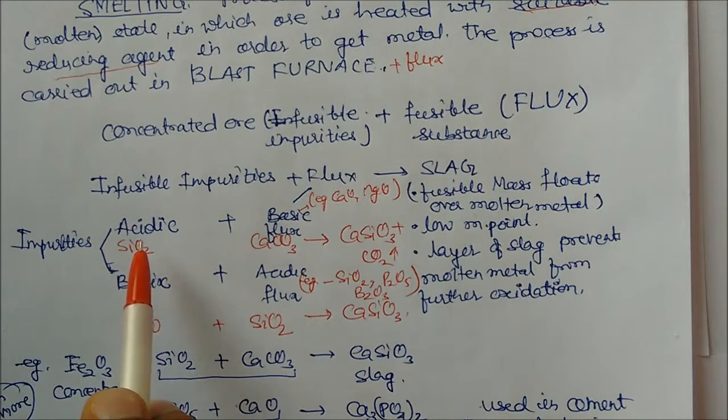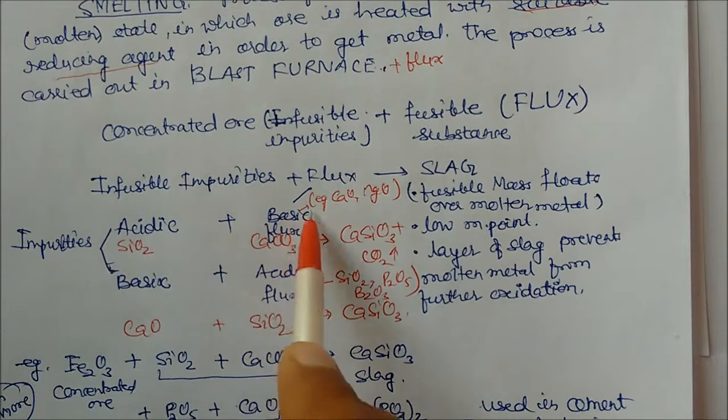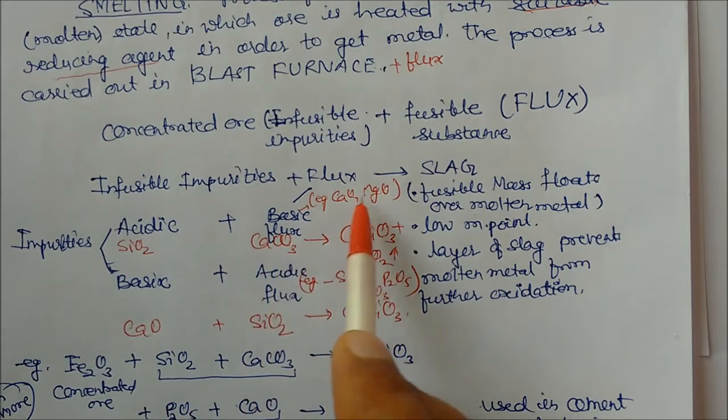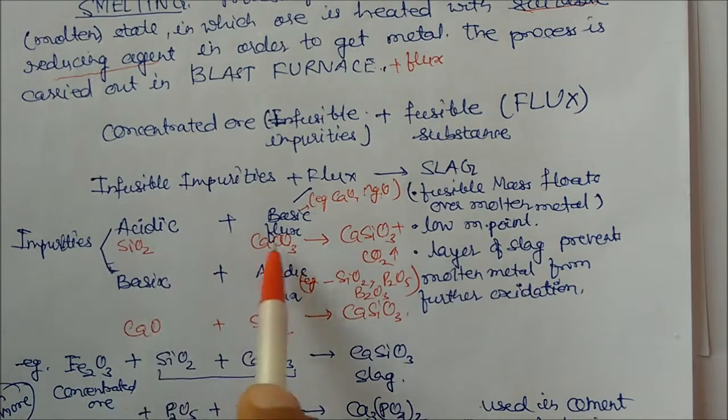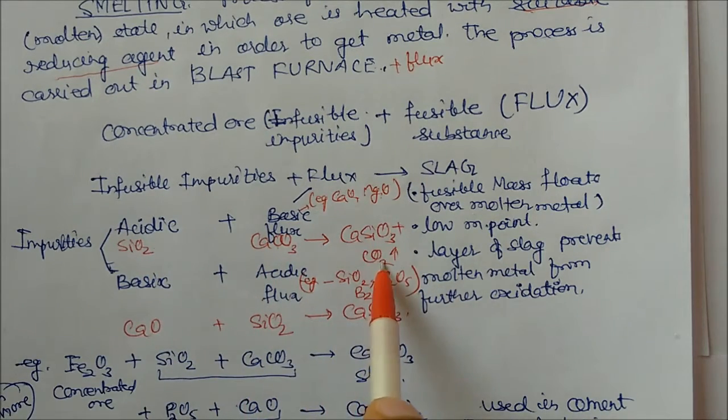So against this acidic impurities, to remove this impurities, we have to add basic flux like calcium carbonate and calcium oxide, magnesium oxide. So this plus this will give you calcium silicate plus carbon dioxide.